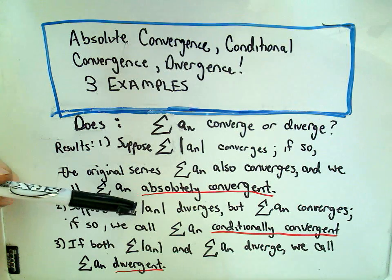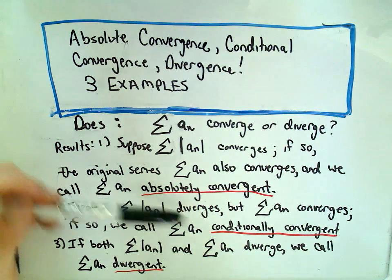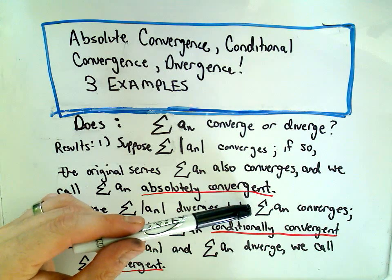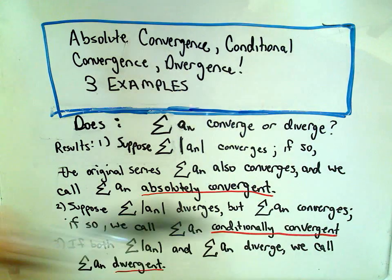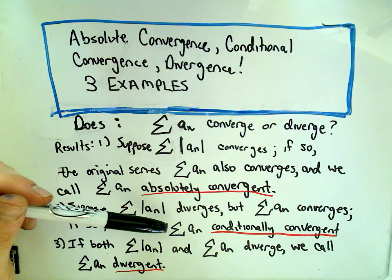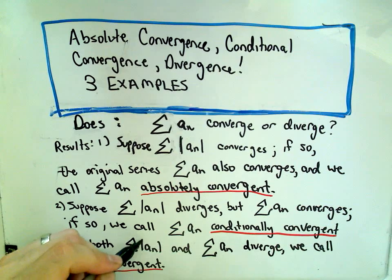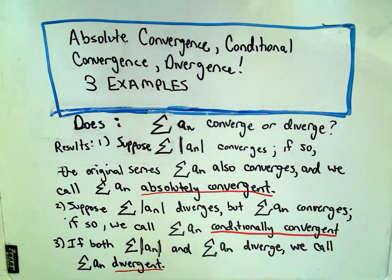It's possible that you put the series in absolute value and it diverges. But if you had just left it alone in the first place, it turns out that that series could have converged. If that happens, we call the original series conditionally convergent. And it's possible that we put it in absolute value, it diverges, we look at the original, it diverges — and we just say that series is divergent.